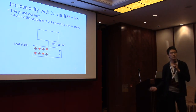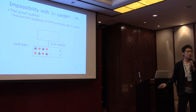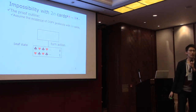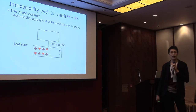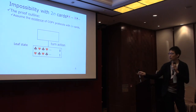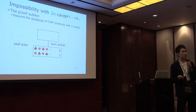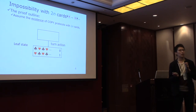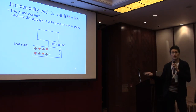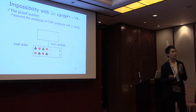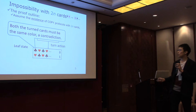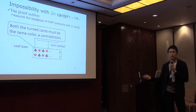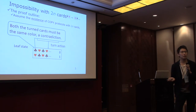We first outline the impossibility proof with 2n cards. We assume for a contradiction that a copy protocol with 2n cards exists. Consider the final leaf state: if the input is 0, there are n black-red pairs; if the input is 1, there are n red-black pairs. A shuffle cannot be the last action, because a shuffle usually increases the number of sequences in the state. So the last action must be turning over a card. But in that case both turned cards must be the same color — a contradiction. Therefore we need at least 2n+1 cards.